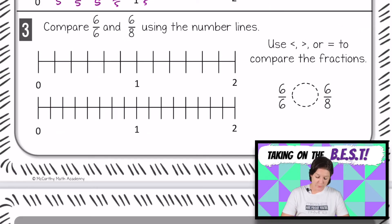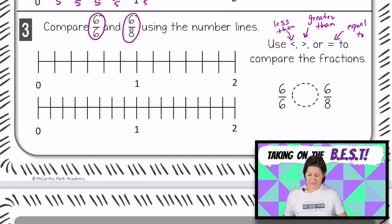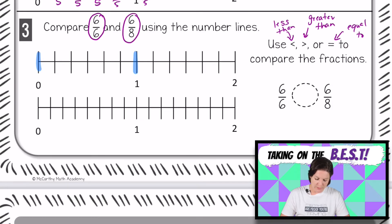Okay, number three says that we're going to compare 6/6 and 6/8 using the number line below. And there we go for our signs that we're using the less than, greater than, or equal sign to correctly compare the fractions. Let's see what we've got happening in that first number line. We have the whole number zero and the whole number one. And the jumps in between would be 1, 2, 3, 4, 5, 6. There are six equal jumps between each whole.